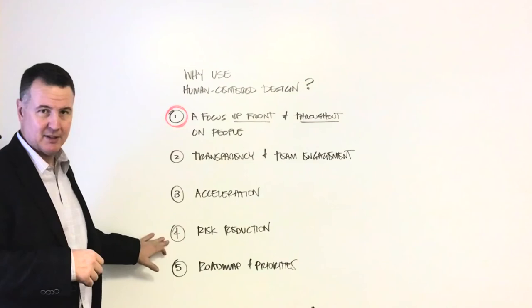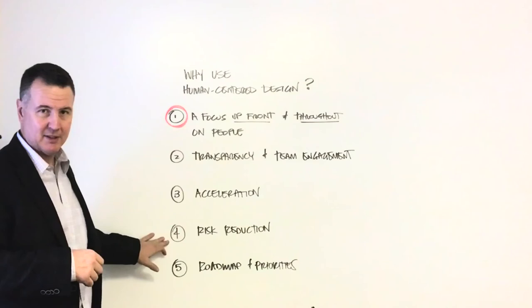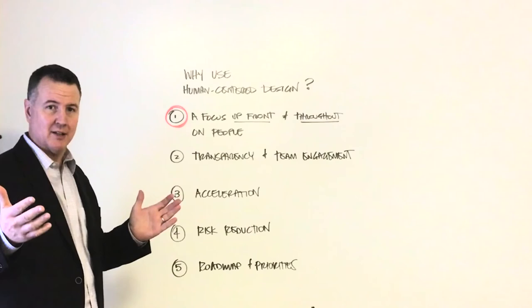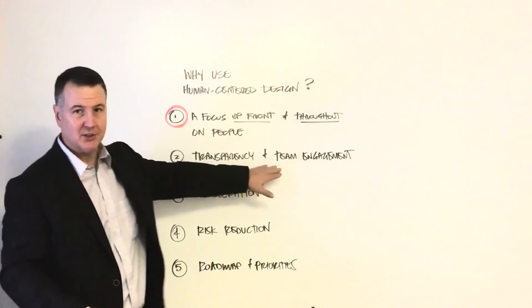Involving people throughout the process is a form of risk reduction. So you're not waiting until the end to unveil what it is that you've done, and you're not waiting to engage people at specific gates in the process. A team is interdisciplinary, and you're reducing risk by including them and focusing on users throughout.